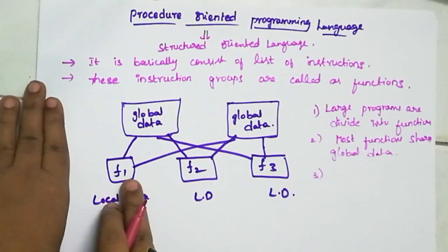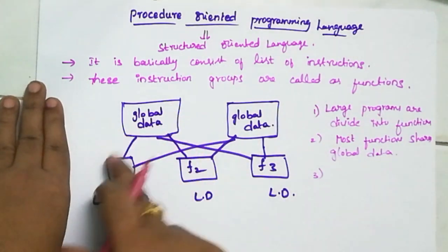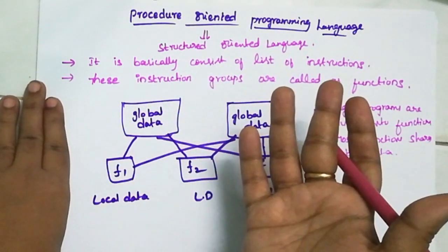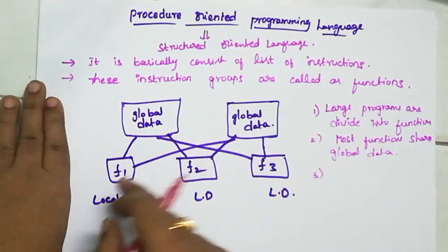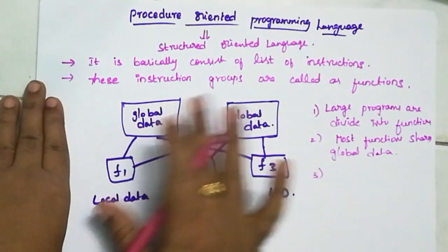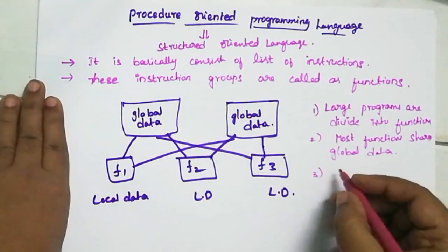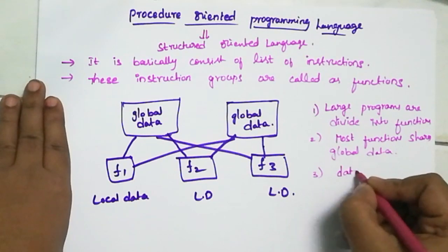So here one important point to observe: every function, one function to another function, data transforms. And then function transforms data from one form to another form. We may access different types of data. That is one point: data from one form to another form.